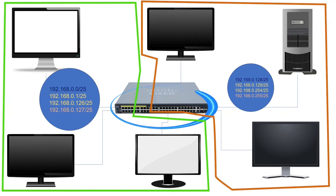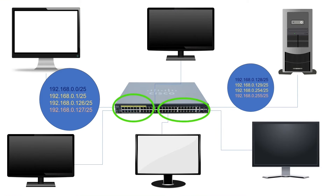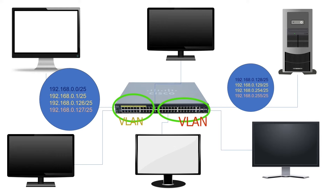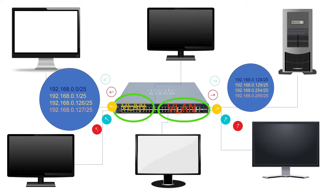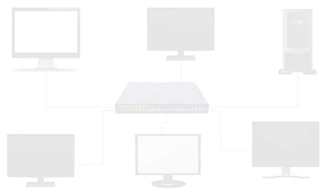VLAN allows us to define subnets on switch ports. If we use this feature, the switch will forward broadcast frames within the subnet. The subnets we create on the switch are known as VLANs, or we can say a VLAN defines a subnet on the switch used to control broadcast at layer 3. Once implemented, the switch forwards frames only inside the VLANs and never forwards frames between VLANs.